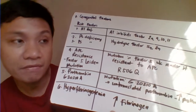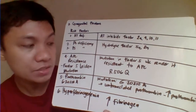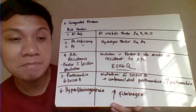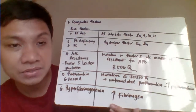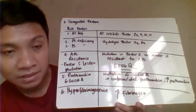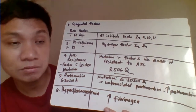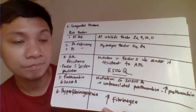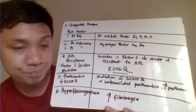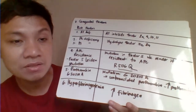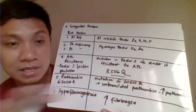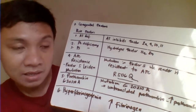APC resistance, also called Factor V Leiden mutation, is characterized by the R506Q mutation, where glutamine replaces arginine at position 506. This renders Factor V resistant to APC, so it cannot be digested. Factor V keeps promoting clot formation without inhibition, resulting in thrombosis.